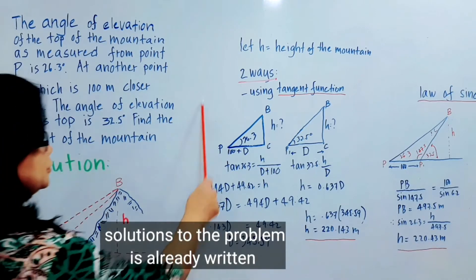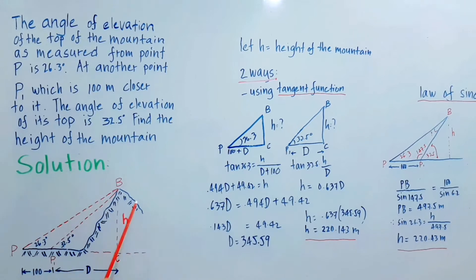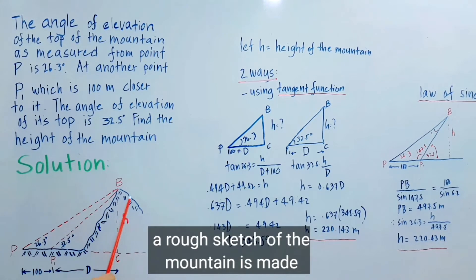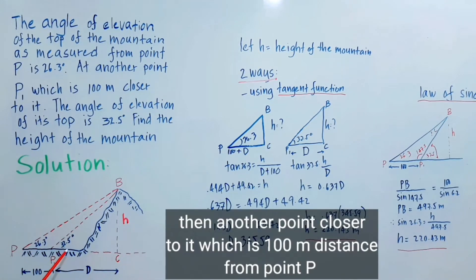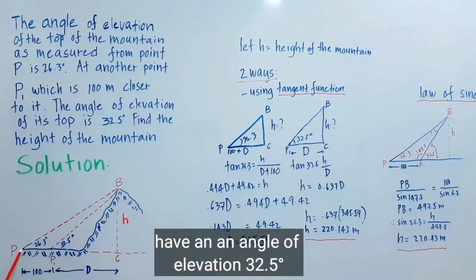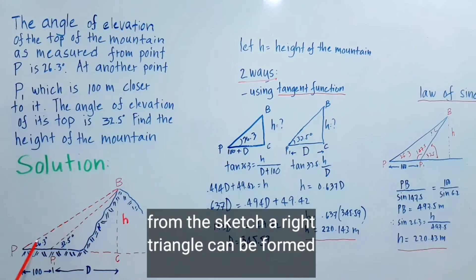I've already drawn the solution here. I sketched a rough sketch of the mountain. It says here the angle of elevation to the top of the mountain is 26.3. This is the first point. Then another point closer to it which is 100 meter distance from point P is equal to 100 meter, and has an angle of elevation of 32.5 degrees.